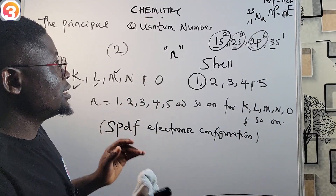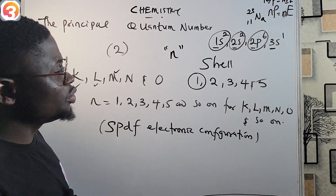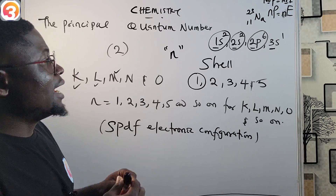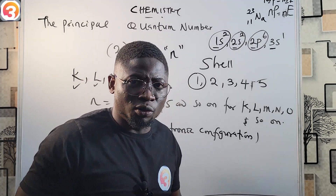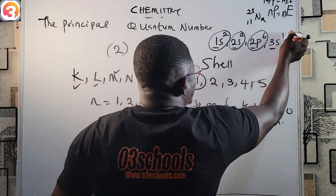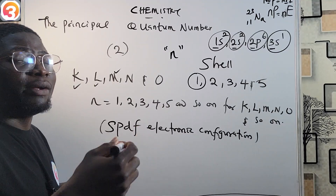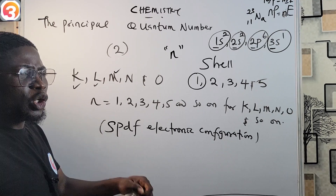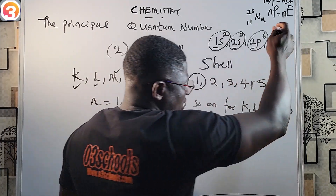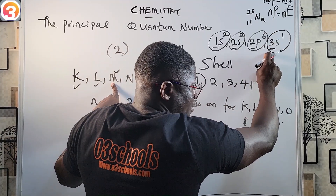The principal quantum number is useful in writing the spdf electronic configuration. The largest principal quantum number corresponds to the shell where the outermost electron belongs. For sodium, the outermost electron is 3s¹, so the largest principal quantum number is 3, which corresponds to the M shell.